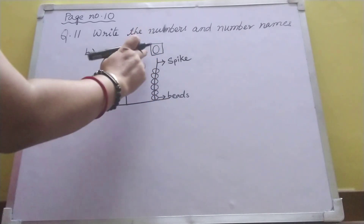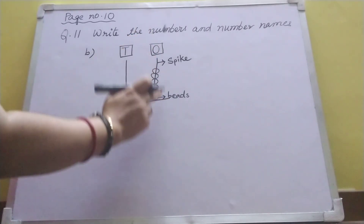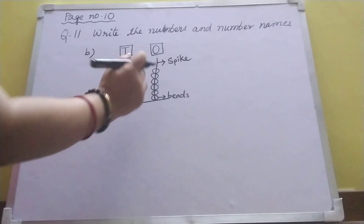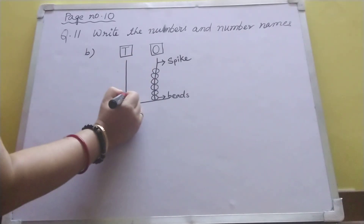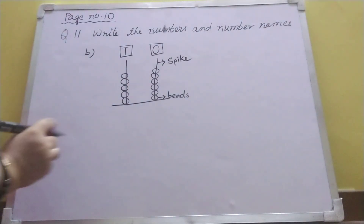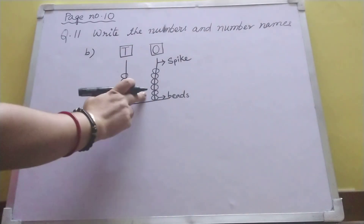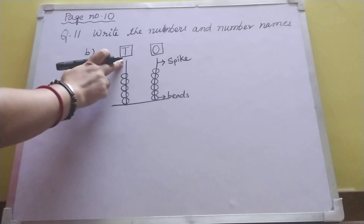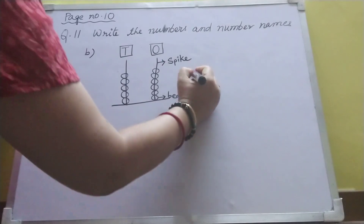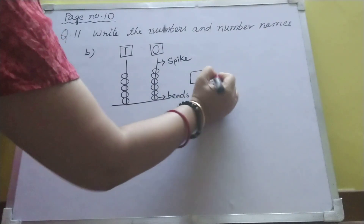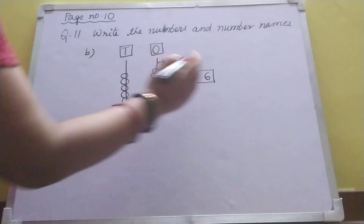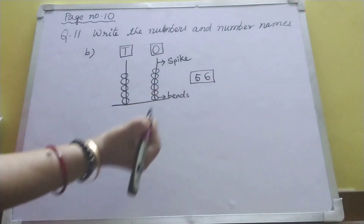Now here in the 1's place, how many bits are there? 1, 2, 3, 4, 5, 6. And here 5: 1, 2, 3, 4, 5. So in this spike, 6 bits are there. In the 10's spike, 5 bits are there. So I will write: 6 in the 1's place and 5 in the 10's place. So the number is 56.